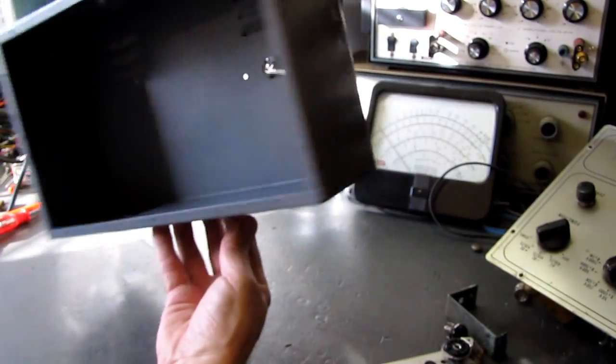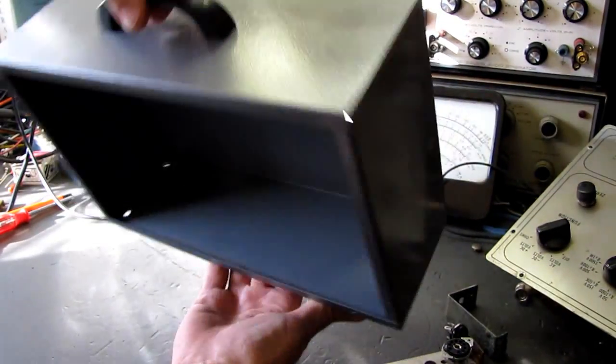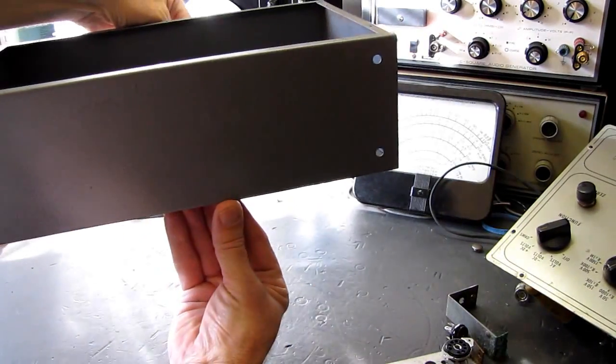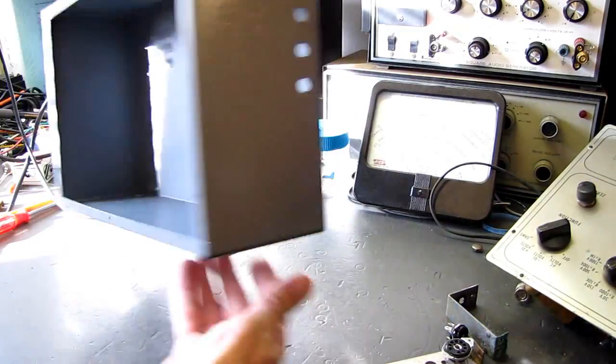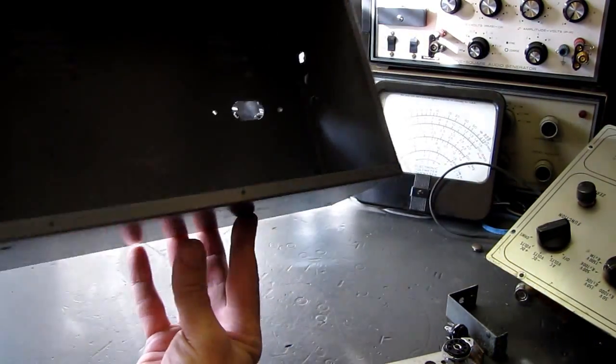But we sanded it down. We put a little bit of Rust-Oleum Distressed Gray, distressed metal paint as I call it. It leaves like a wrinkled finish. It's not perfect, but a heck of a lot better looking than it was.